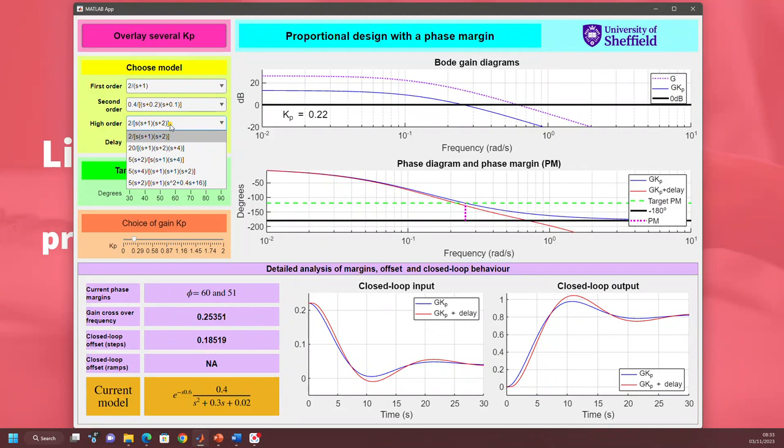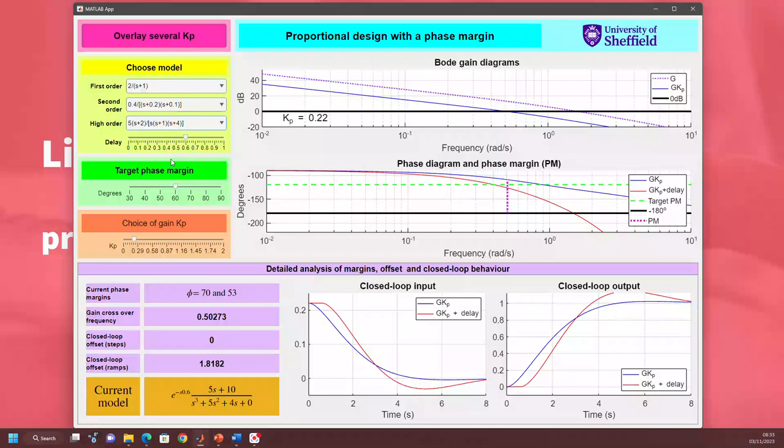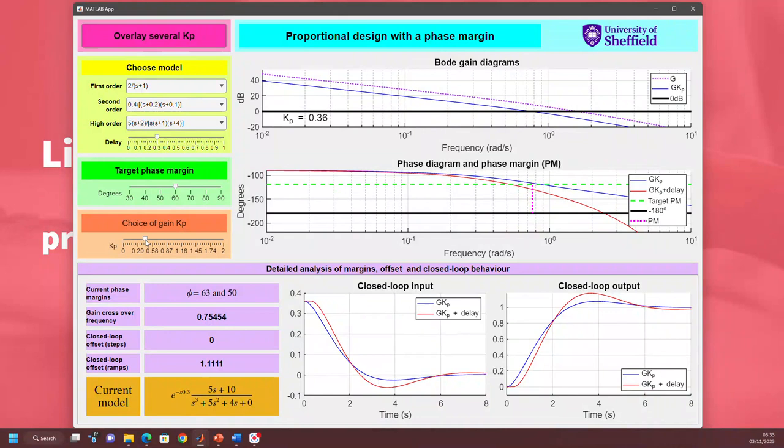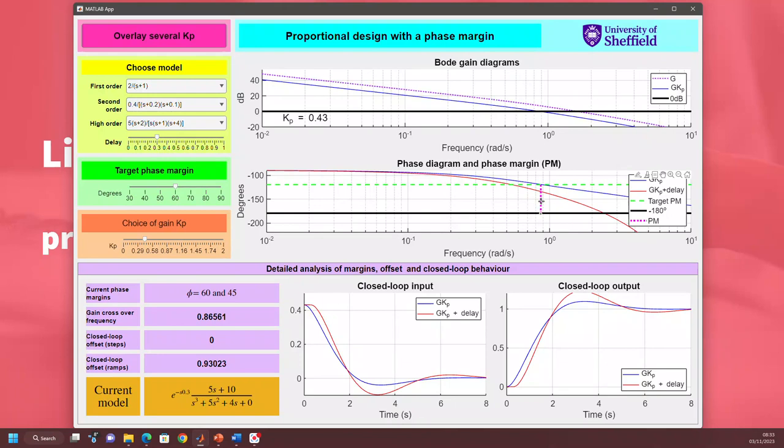Now of course, I can try some other systems. For example, let's try this system here, a third order system, the delay a bit smaller. And again, you can see I can do the same process here. You can see the pink line is above the green line. So maybe k needs to be a bit bigger. So I make k bigger, a tiny bit bigger again, until I've basically got the phase margin that I want.